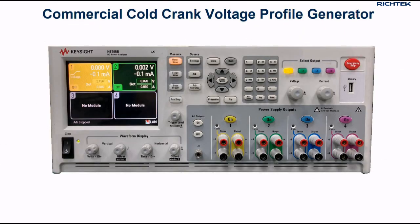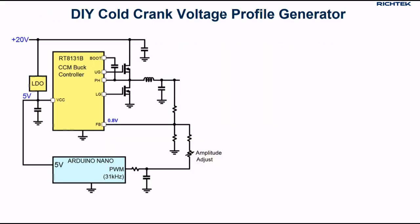For testing with cold crank voltage profiles in the lab, often a programmable power supply is used like the one shown here. But it is also possible to build your own cold crank voltage profile generator by means of an Arduino and a high-current CCM buck converter like the RT8131B shown here.